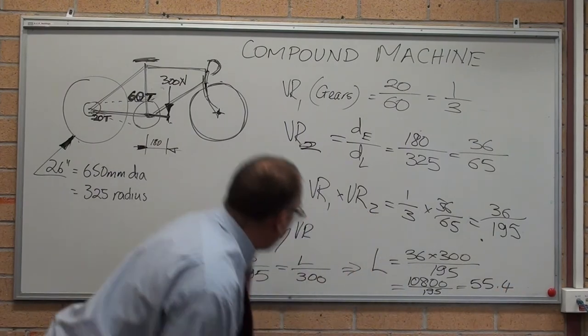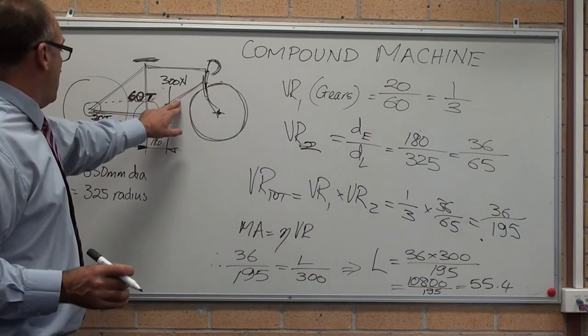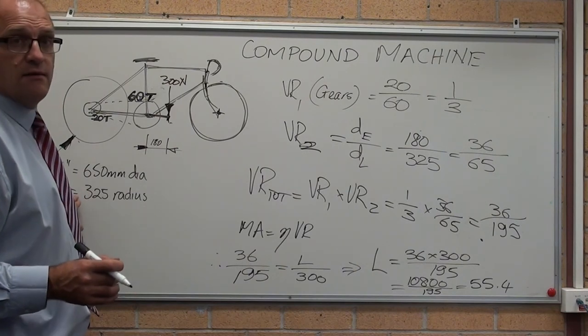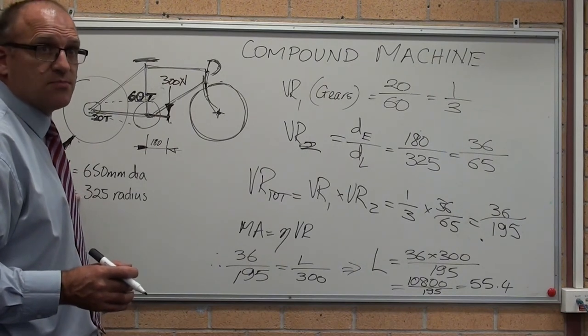So, for your 300 newtons force here, you get 55 newtons of force there at a faster speed.